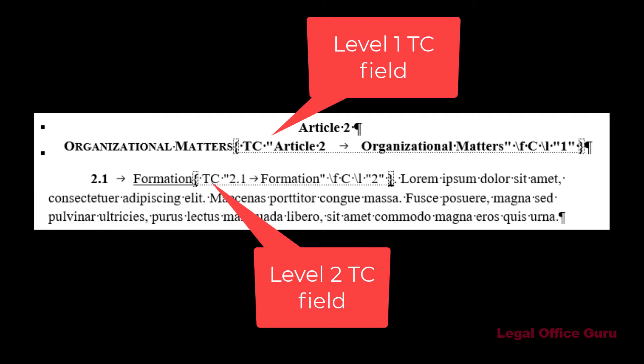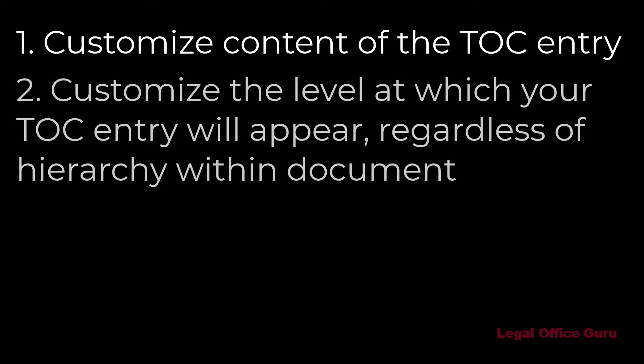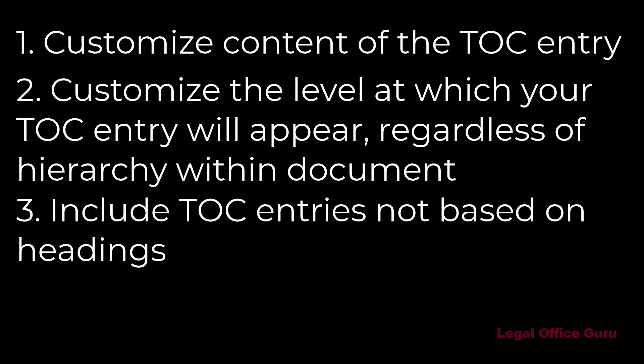TC fields — aka table entry fields for table of contents — are the legacy way of marking text to include in a table of contents, left over from pre-ribbon versions of Word. While using styles to populate a table of contents is the preferred method, TC fields offer some advantages. One, you can customize the content of the TOC entry — it doesn't have to match exactly with the text of the document itself. Two, you can customize at which level your TOC entry will appear, regardless of how it appears in the hierarchy of the document. And three, you can include TOC entries that aren't based on headings. TC fields are a little harder to set up, but in situations where there are inconsistencies between the way entries appear in the document versus the table of contents itself, these fields give you some needed flexibility.